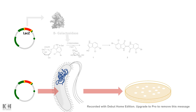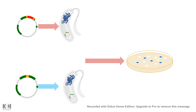When you plate these transformed bacteria on a petri dish, colonies appear either blue or white. Blue colonies correspond to the self-ligated plasmid where the lacZ screenable marker gene is undisrupted. White colonies correspond to disruption of the screenable marker gene — meaning those colonies contain the gene of interest.